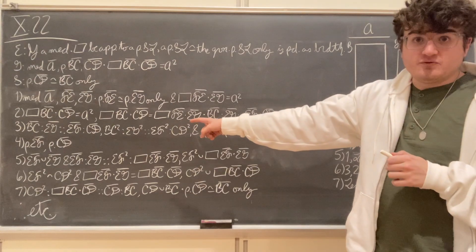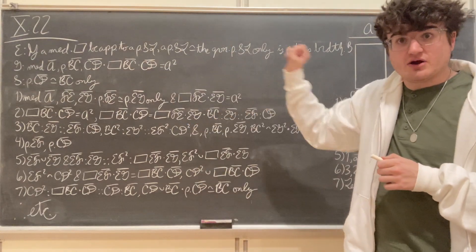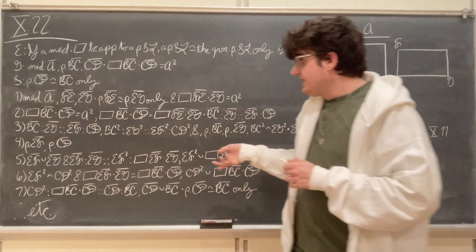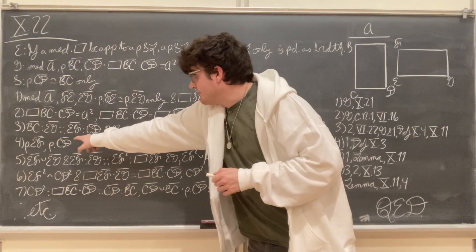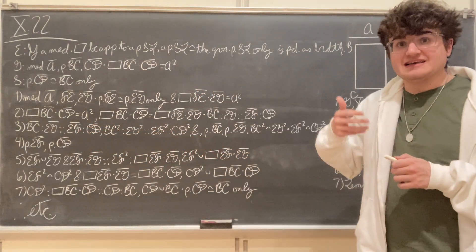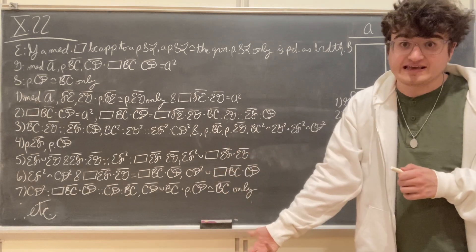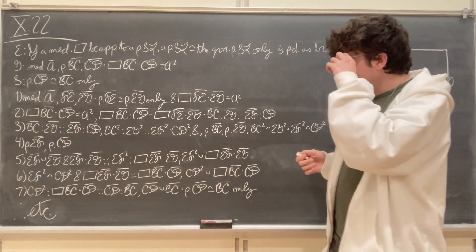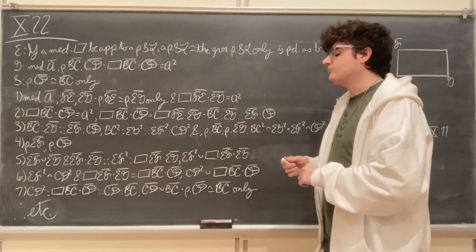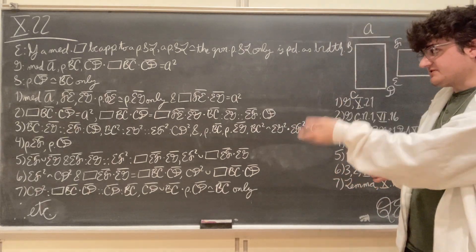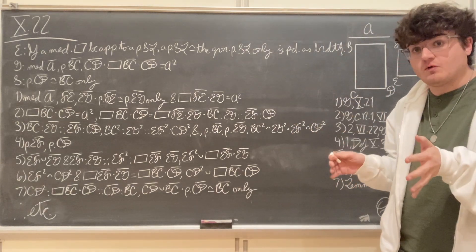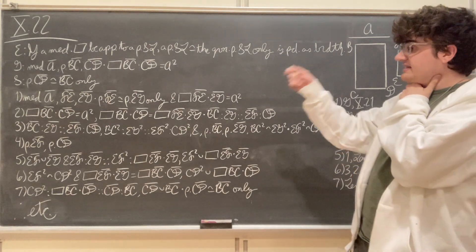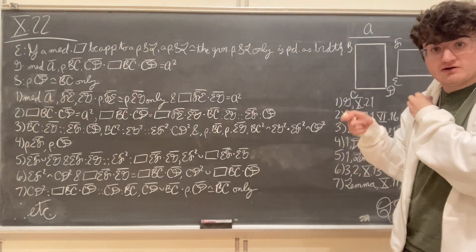Now EF was set out as a rational straight line in our first step, so again we know from Definition 10.3 that CD must also be rational, because it is commensurable in square with a given rational straight line, and therefore must also be rational. We've just shown that CD is rational, which is half of what we wanted to prove. Let us now prove the second half: that CD is commensurable in square only with BC.